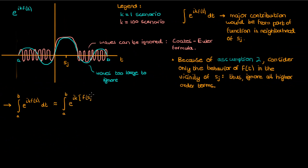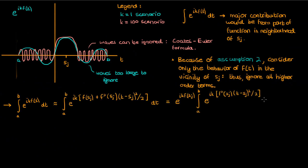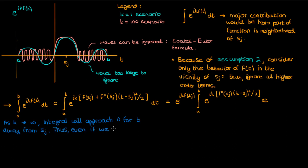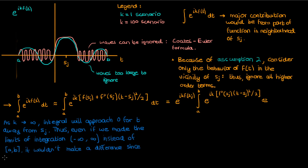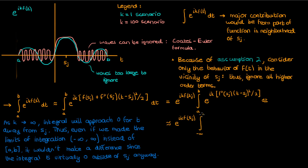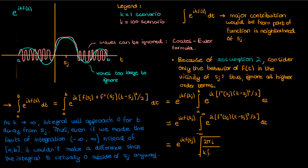Let's simplify the terms being exponentiated and take out the constant exponential from the integral. Now I'm going to make another approximation: as k gets very large this integral is approximately 0 away from s_j, so even if we made our limits of integration go from negative infinity to infinity instead of a to b it wouldn't really make a difference, since the integral is virtually 0 outside of s_j anyway. Therefore we change the limits of integration to negative infinity to positive infinity. The integral then becomes an integral of the exponential of i times constants times something squared — a standard Gaussian-type integral — and here is your final answer.